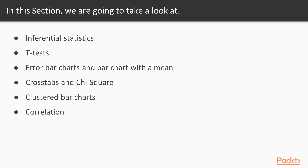Finally, we're going to talk about the type of test you would use when you have two continuous variables. For example, we may be looking at the relationship between SAT scores and first-year college GPA. We're going to talk about how to do correlations. Once we've done that, we're going to conclude this chapter by talking about how to create a scatter plot so that you can visually assess the relationship between those two continuous variables.